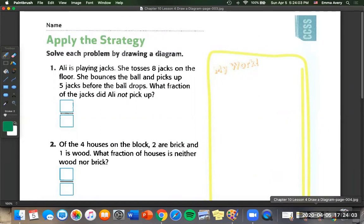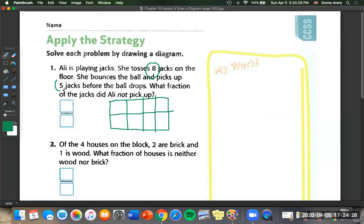Allie is playing jacks. She tosses eight jacks on the floor. She bounces the ball and picks up five jacks before the ball drops. So we know that our diagram needs to have eight spots because she tosses eight jacks. I'm going to draw a rectangle with eight spots. And she picked up five jacks. So I'm going to shade in one, two, three, four, five spaces.